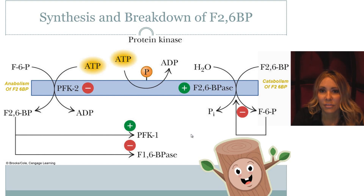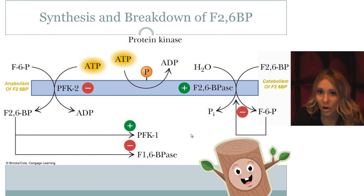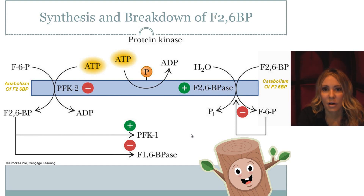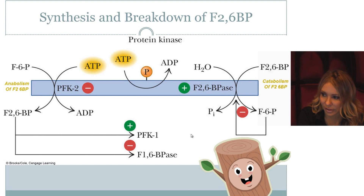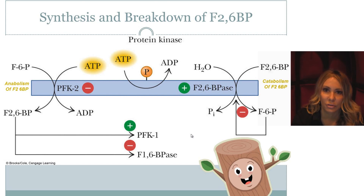PFK — step three of glycolysis — is the most important enzyme of the pathway, providing the key intermediate fructose 1,6-bisphosphate, which also acts as a feed-forward activator of step ten. This enzyme is not only allosterically controlled but also covalently controlled via phosphorylation and dephosphorylation through the bifunctional enzyme containing PFK2, which favors glycolysis, and F2,6-bisphosphatase, which favors gluconeogenesis.